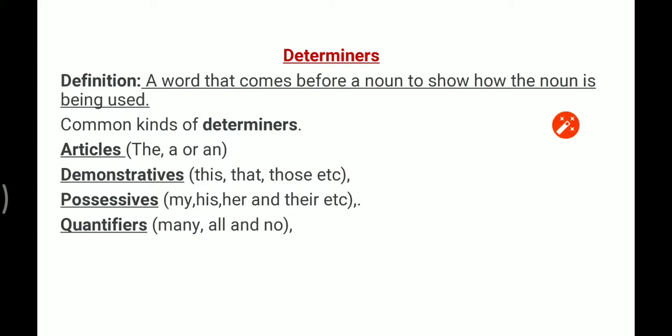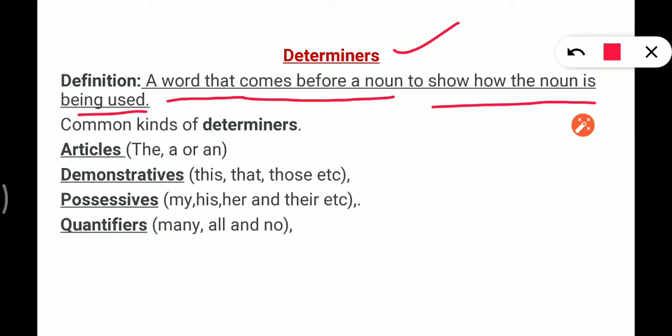First of all, we are going to discuss determiners. So what is a determiner? A determiner is a word that comes before a noun to show how the noun is being used in a sentence. So it is clear that a determiner always comes before a noun and it shows how the noun is being used.